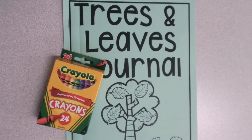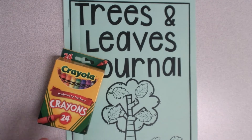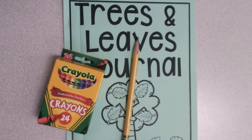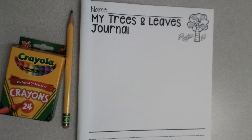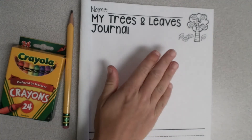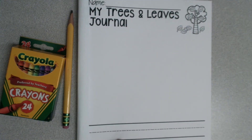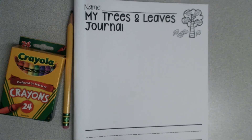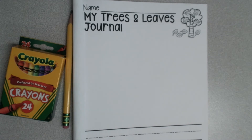Okay kiddos, for this activity you will need your tree journal and something to color with as well as something to write with. I have all three of my supplies and it's time to get started. Let's open up our journal to our next empty page. Here's my next empty page — you can see I have my space for my picture and my space for my words down at the bottom. For our journal today we are going to draw and describe art.